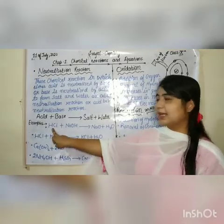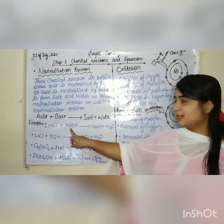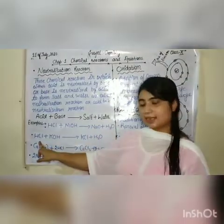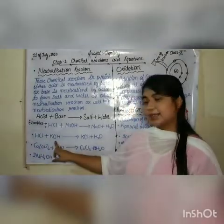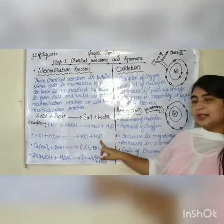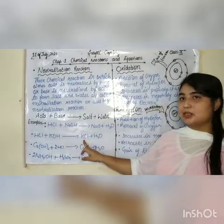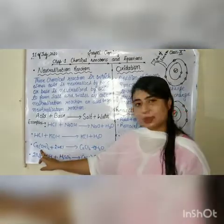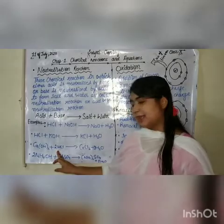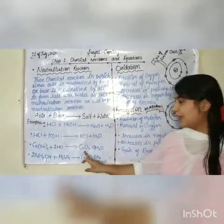जैसे HCl — आप जानते हैं acid है — plus NaOH, base है, form करता है NaCl plus H₂O। Next example: HCl plus KOH form करेगा KCl plus water। Acid react कर रहे हैं base के साथ, form कर रहे हैं salt and water। ऐसे ही calcium hydroxide base react कर रहे हैं acid के साथ, CaCl₂ यानी calcium chloride plus water form कर रहे हैं।